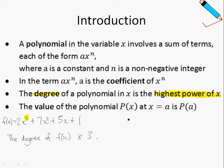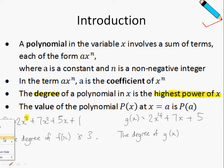So one more example. Let's say gx equals 2x power 4 plus 7x plus 5. Then, the degree of gx is just the highest power of x, and in this case, the highest power of x is 4. Therefore, the degree of gx is 4.